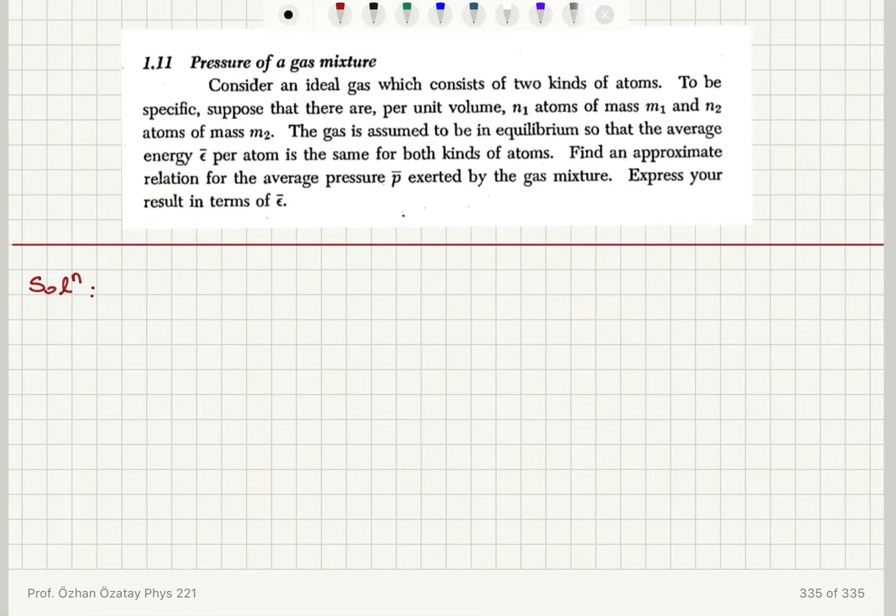Pressure of a gas mixture. Consider an ideal gas which consists of two kinds of atoms. To be specific, suppose that there are per unit volume N1 atoms of mass M1 and N2 atoms of mass M2. The gas is assumed to be in equilibrium so that the average energy per atom is the same for both kinds of atoms. Find an approximate relation for the average pressure exerted by the gas mixture. Express your result in terms of Epsilon bar.